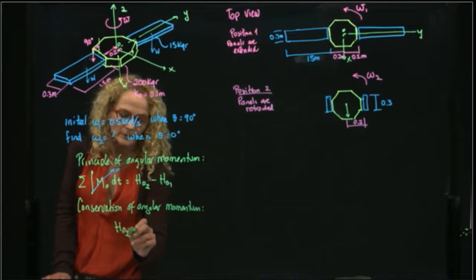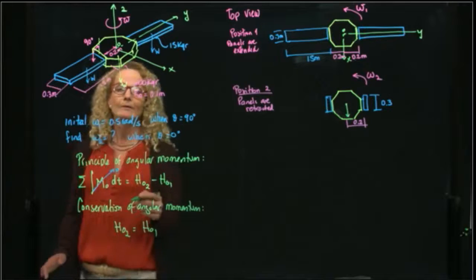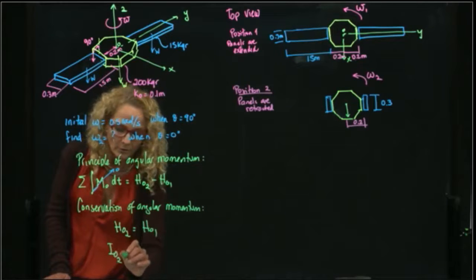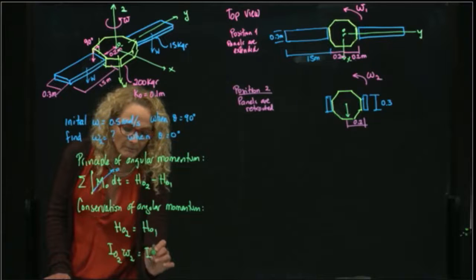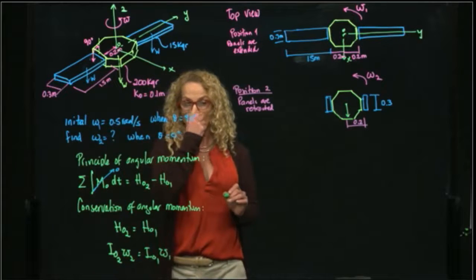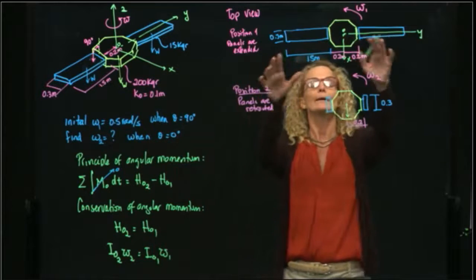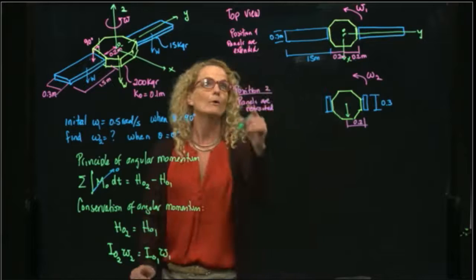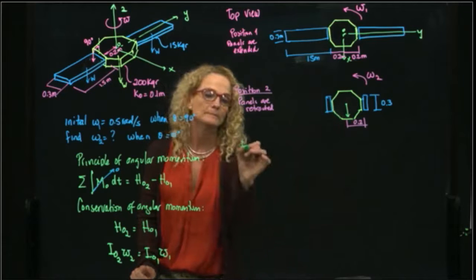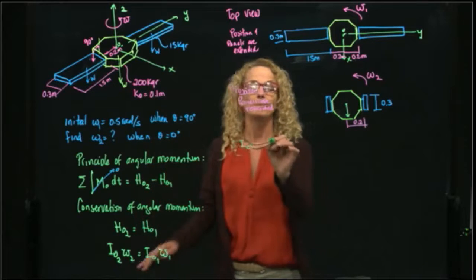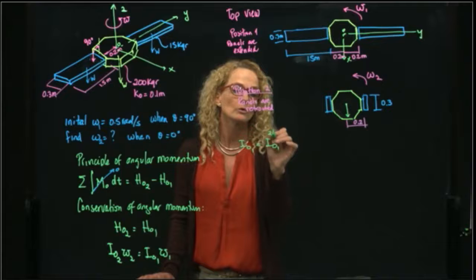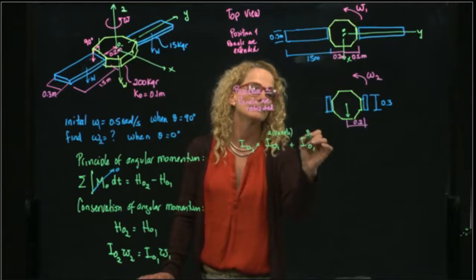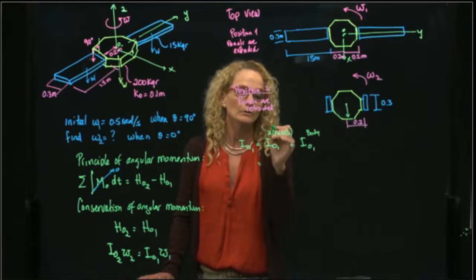Since the moment is zero, we have conservation of angular momentum, and therefore h₂ equals h₁. For a rigid body, the angular momentum is the mass moment of inertia times the angular velocity. In this case, we have two panels plus the body in position 1, and here we have the two panels but much smaller. So let's calculate the moment of inertia in position 1, which will be the mass moment of inertia of the two panels plus the inertia of the body.